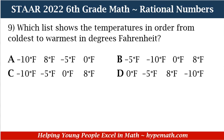Is it A: negative 10°F, 8°F, negative 5°F, 0°F? B: negative 5°F, negative 10°F, 0°F, 8°F? C: negative 10°F, negative 5°F, 0°F, 8°F? Or D: 0°F, negative 5°F, 8°F, negative 10°F?